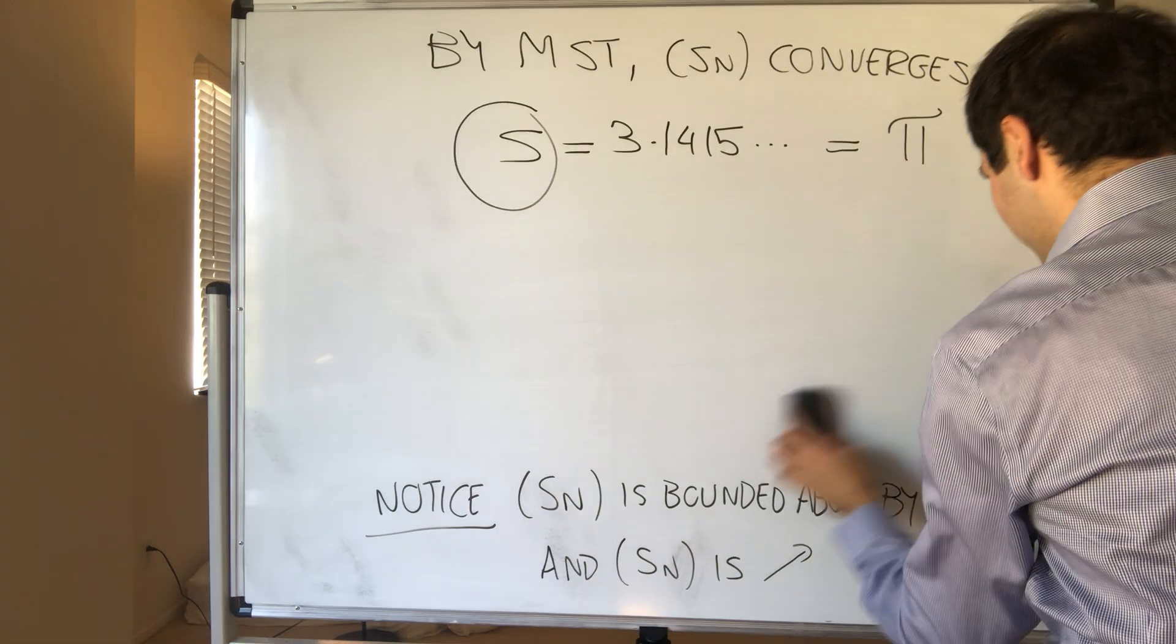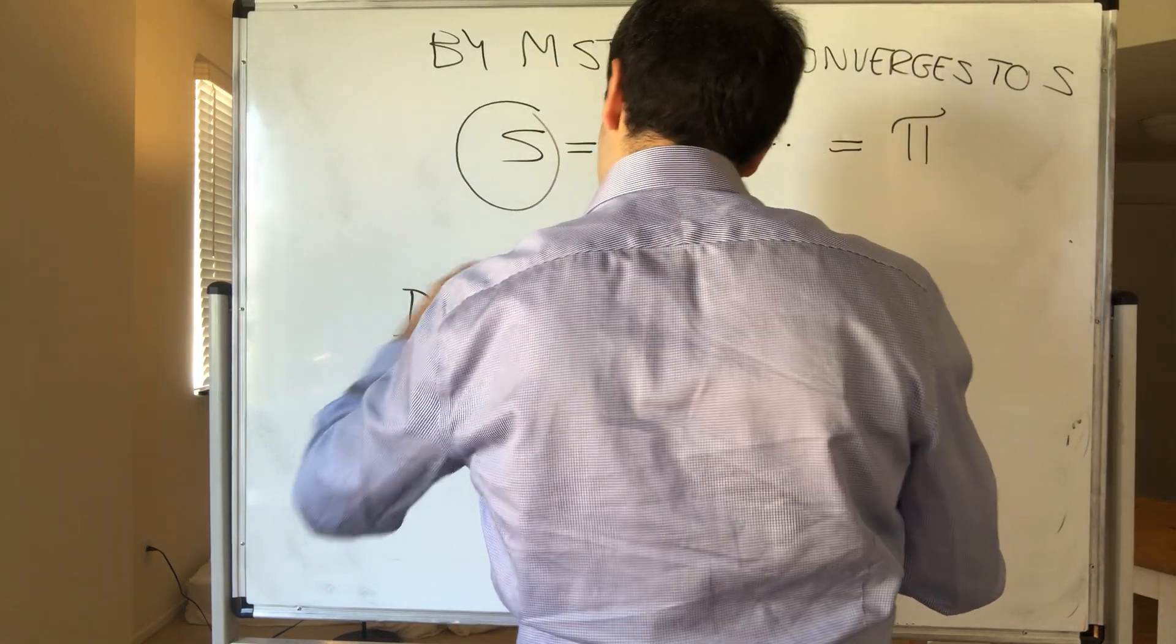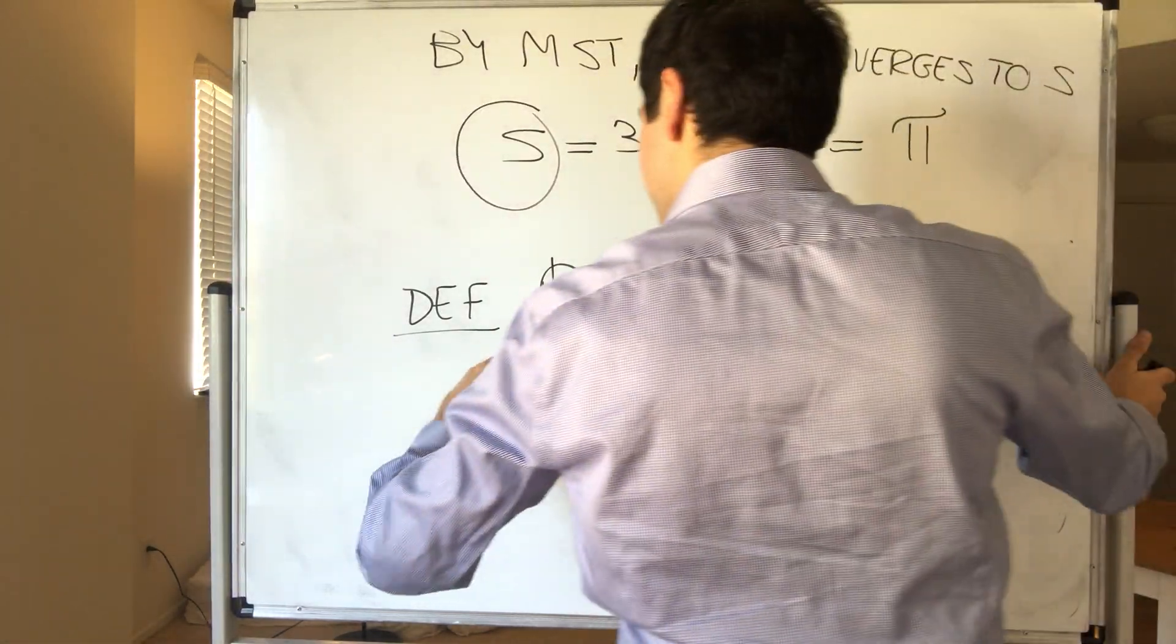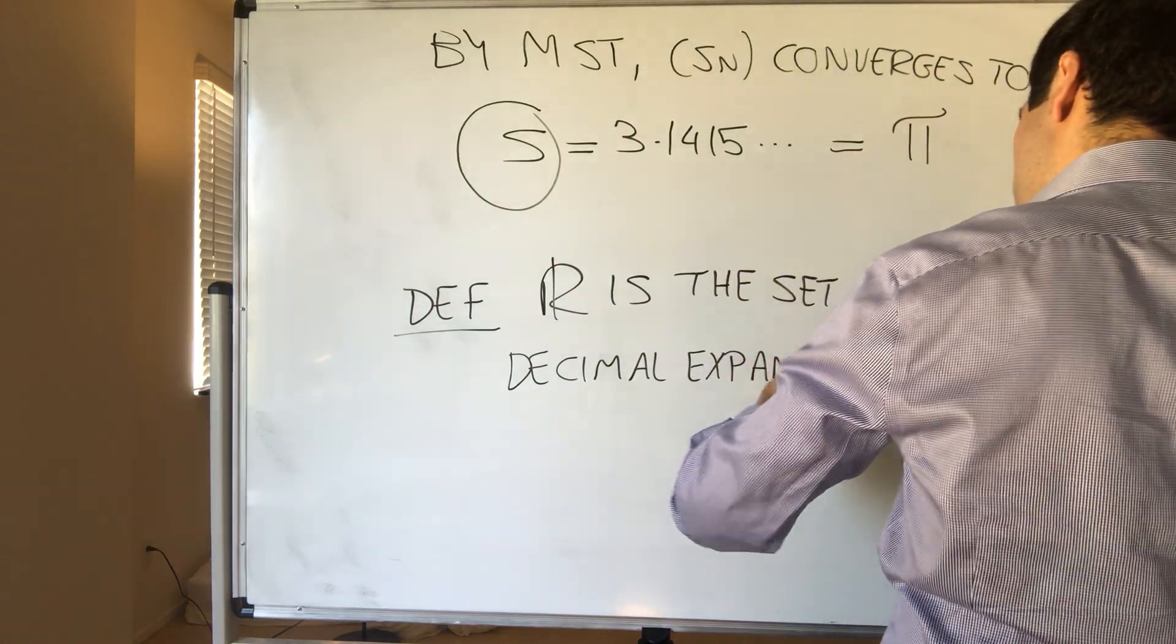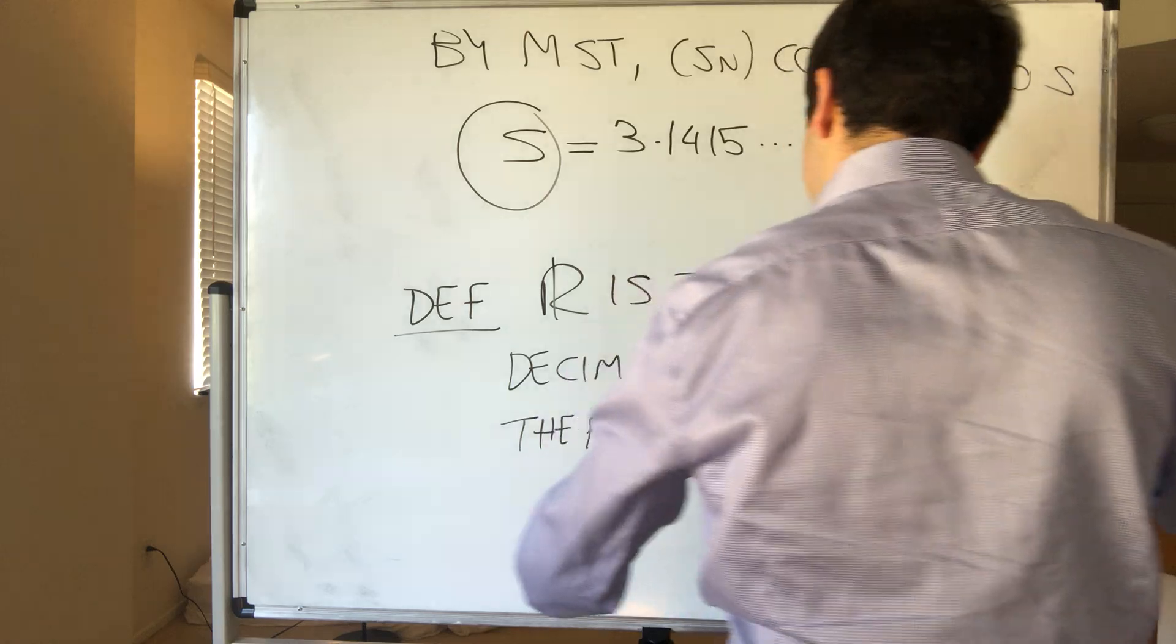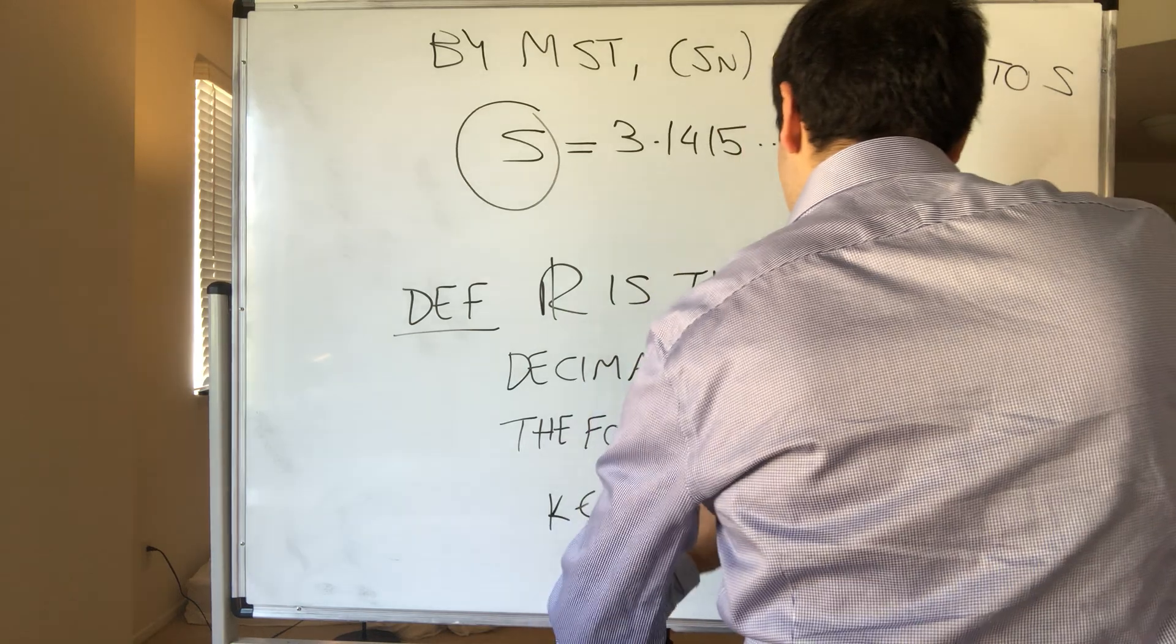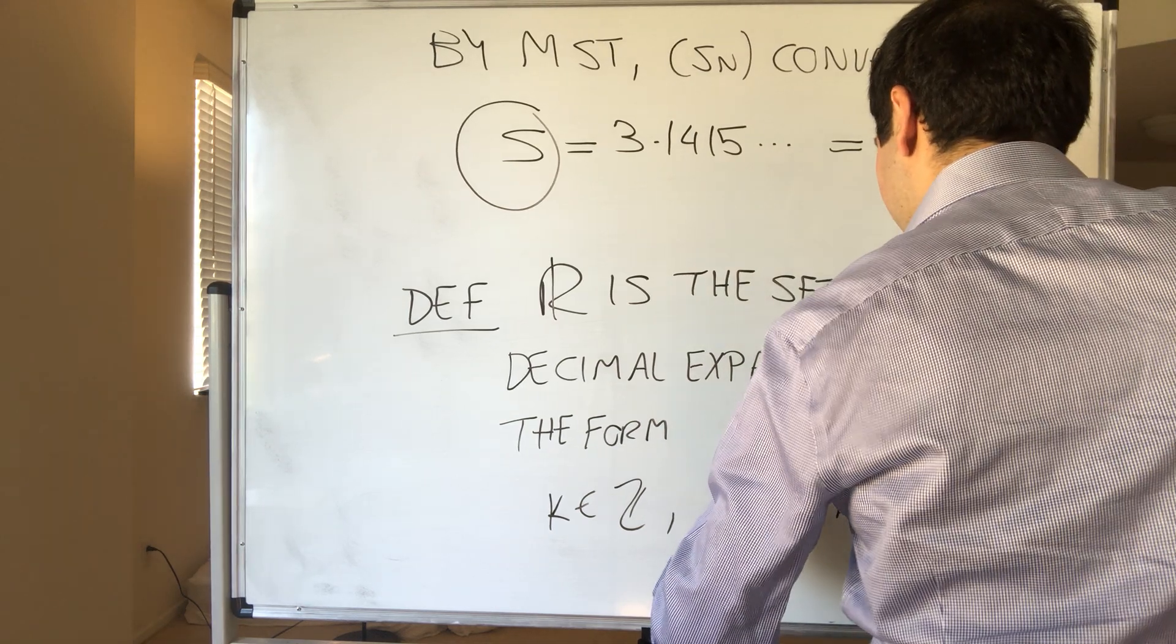So definition. R is just the set of all those limits, so of all decimal expansions of the form k dot d1 d2 d3 et cetera, where k is an integer, and then each di is a digit between 0 and 9.